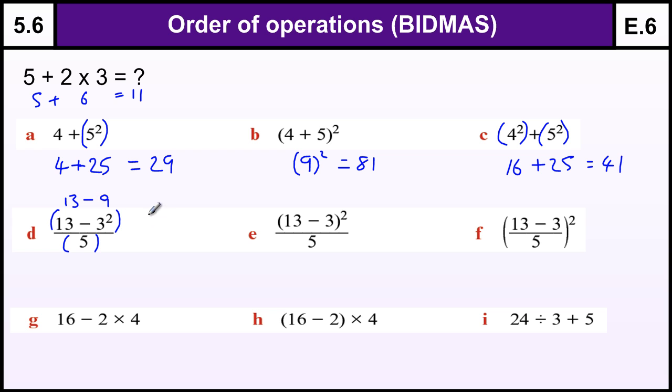And then the bottom is 5. Now I could leave it as 4 fifths—that's fine—but if I knew that was a decimal, that would be 0.8.